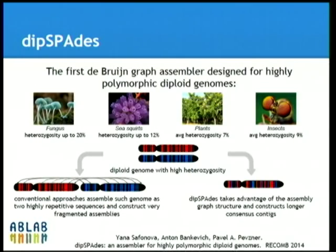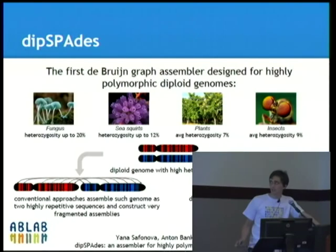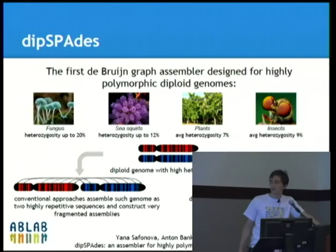As to DipSPADES, we wanted to move from just bacterial genomes to some larger genomes, for example fungi and plants, that have polymorphism rates up to 20% sometimes. If you use standard algorithms, you will probably get two sets of contigs for each haplotype, and the assembly will be very fragmented. But DipSPADES constructs consensus contigs with higher N50 and longer contigs, which are much easier for analysis.